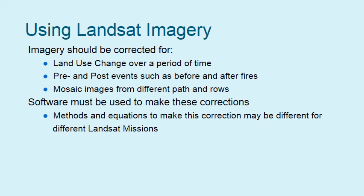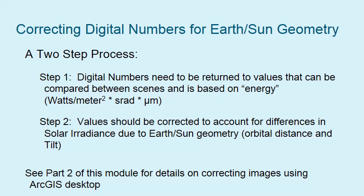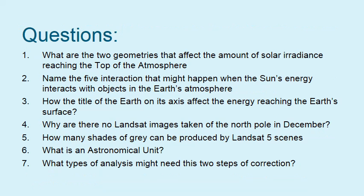Software, methods, and equations to do this differ for different Landsat missions. It's a two-step process to go from digital numbers to real values corrected for Earth-Sun geometry. Step one converts digital numbers back to energy per unit area. Step two takes those converted values and corrects them for Earth-Sun geometry. See part two of this module for details on correcting images using ArcGIS and different equations for both Landsat 5 and Landsat 8.